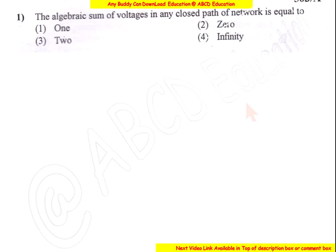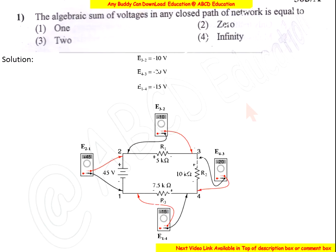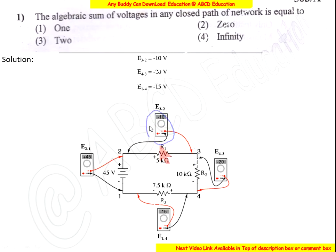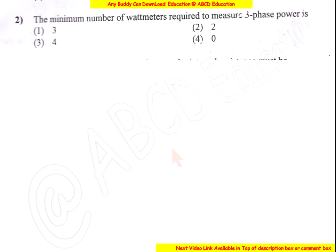The voltage in any closed part of the network is equal to zero. Now coming to the solution: according to Kirchhoff's Voltage Law, the voltage of any element in a closed loop is measured, and the total voltage of this closed loop is equal to zero. So the answer is zero.